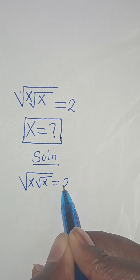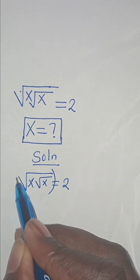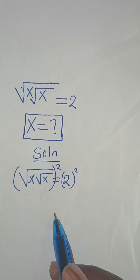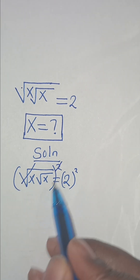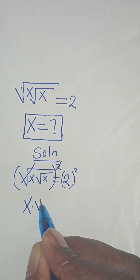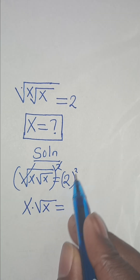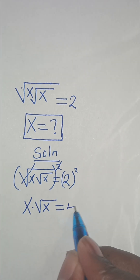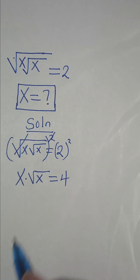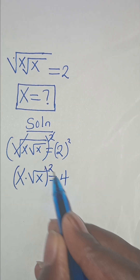The first step is to square both sides, so that we eliminate the first square root sign. This gives us x multiplied by the square root of x, equal to 2 to the power of 2, which is 4.